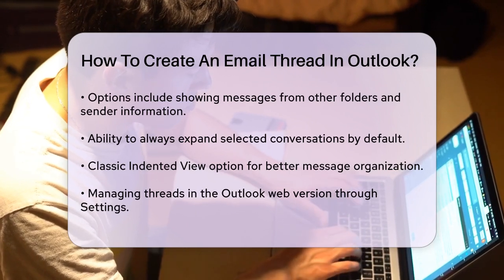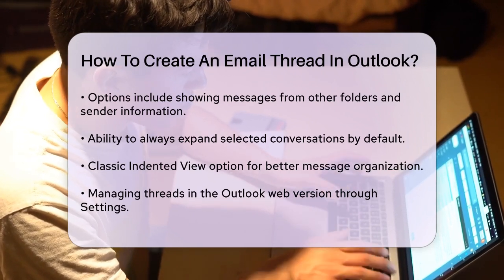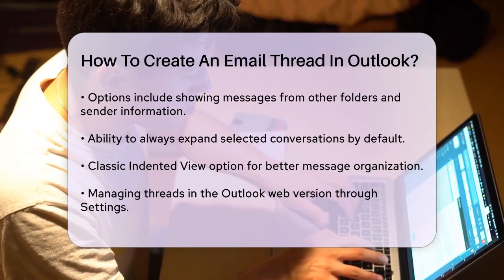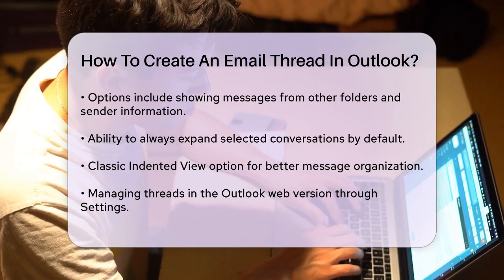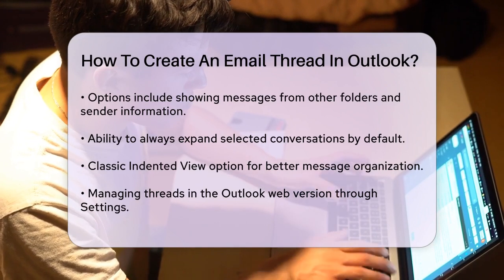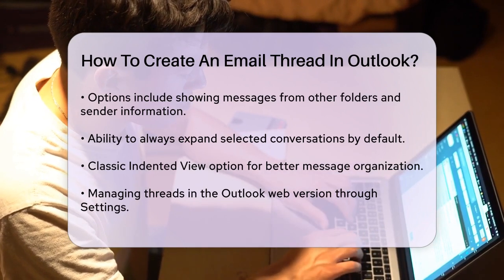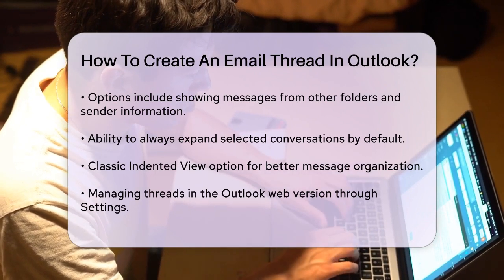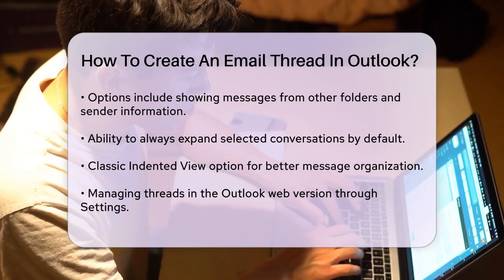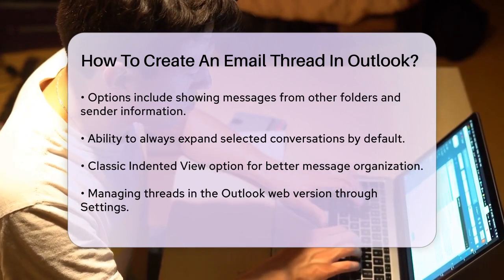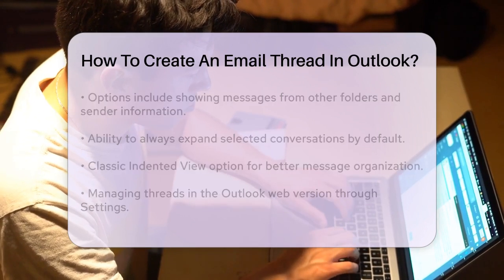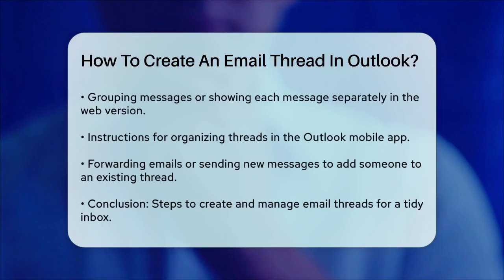To manage threads on the Outlook web version, the process is similar. Log into your Outlook Mail account, click on the gear icon to open Settings, and scroll down to the Arrange Message List section. Here, you can choose to group into conversations or show each message separately.